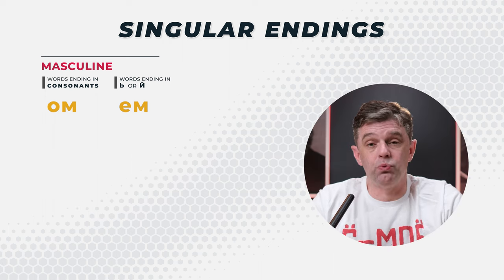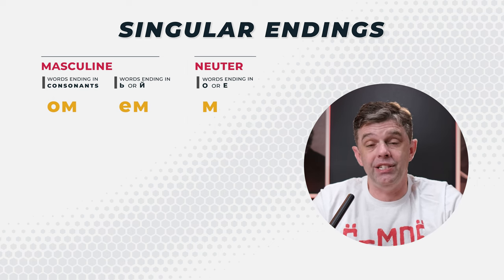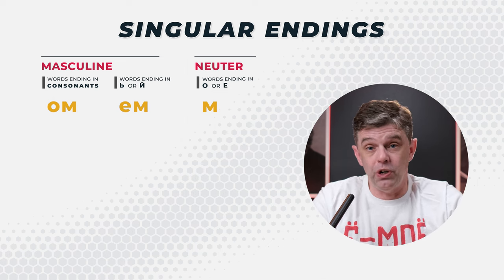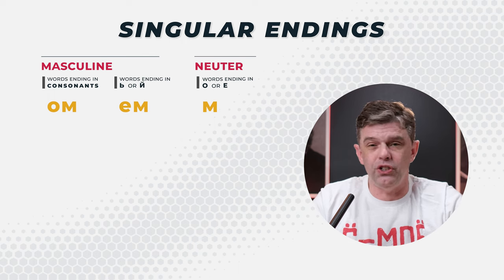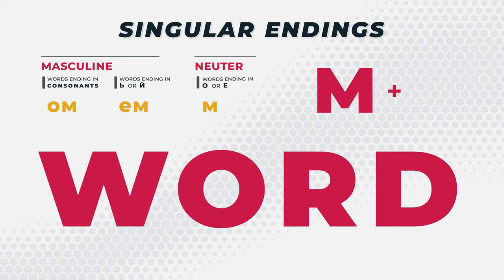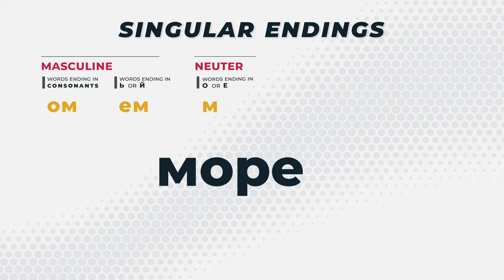The neuter is really easy. They have the same endings, OM and YEM, as the masculine. But it's even a little bit easier because neuter words ending in O, you just add the M on. And neuter words ending in YE, you just add an M on. So you're basically just tacking on an M to the ending of any neuter word. Let's take the word malako — milk. If we want to put that in the instrumental case, it's malakom. Let's take the word moria — a sea. If you want to put that in the instrumental case, it's moriam.